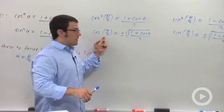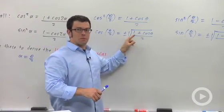And the cosine half angle identity, which is identical except the minus becomes a plus.